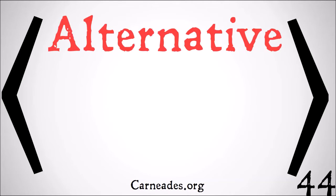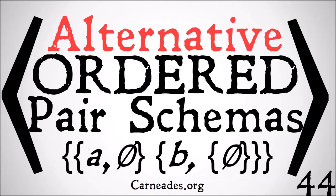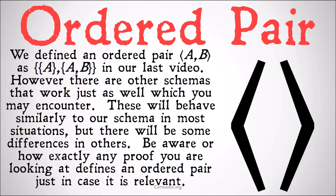In this video we're going to be looking at alternative ordered pair schemas. We defined an ordered pair — angle brackets a, b — as the class of the class of a, and the class of a and b, in our last video. However, there are other schemas that work just as well which you may encounter. These will behave similarly to our schema in most situations but there will be some differences in others. Be aware of how exactly any proof you are looking at defines an ordered pair, just in case it becomes relevant. They should behave the same way on a macro scale, but on a micro scale, line to line of an individual proof, they may act differently.